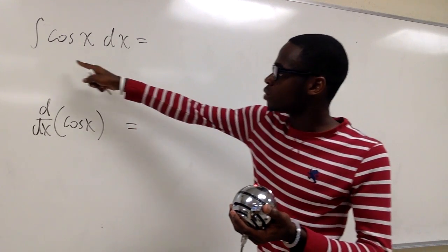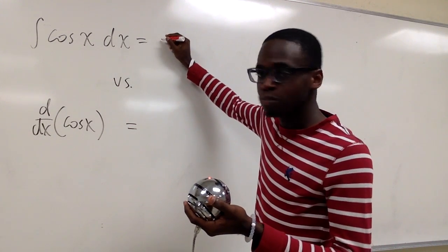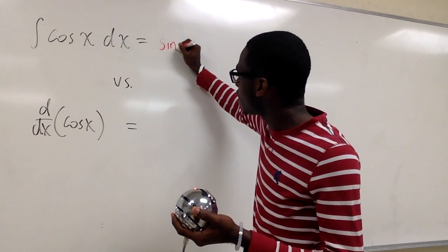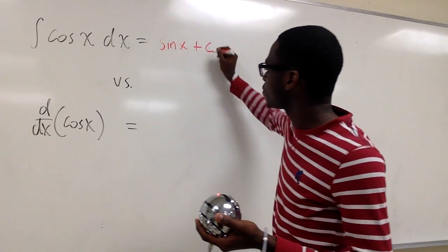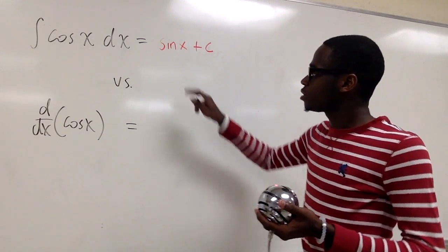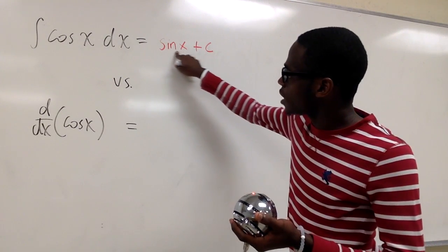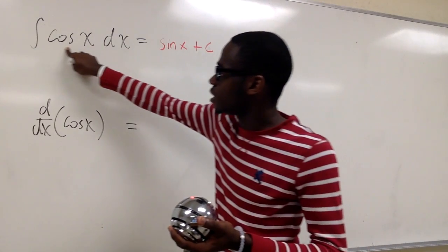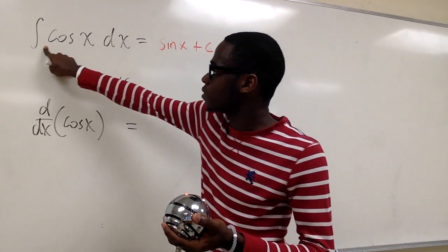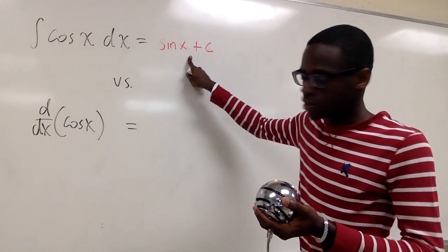Now the integral of cosine x is positive sine x plus c. And what's the relationship between these two? We know that the derivative of sine x is cosine x and we're going from antiderivative to the derivative. And that's it for this one.